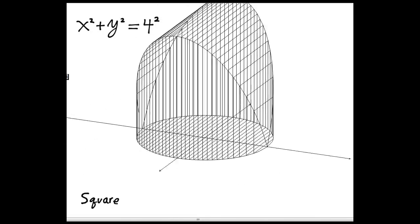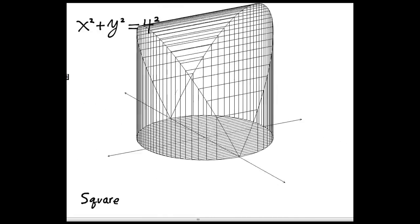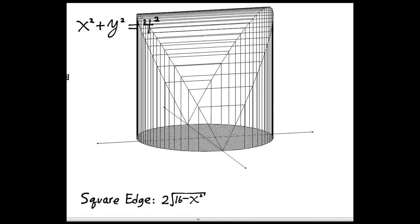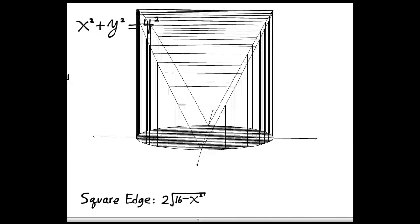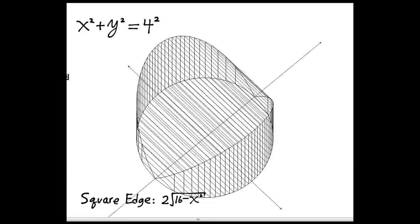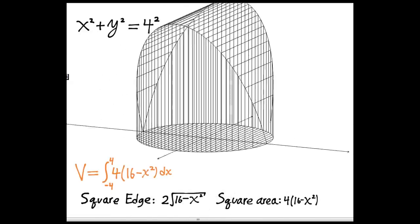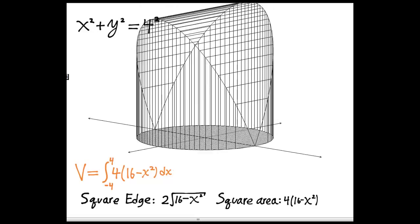To set up the integral, you have to compute as a function of x the length of the side of the square, and then multiply that by dx, or you find the area of that square, multiply it by dx, and you integrate from negative 4 to 4.